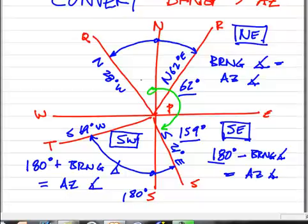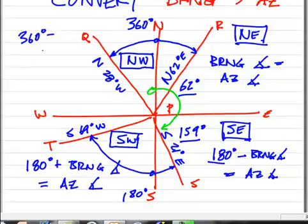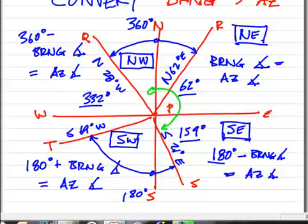And then up to the northwest quadrant, it should be no surprise that since we're dealing with north, but we're going in the counterclockwise direction, we're going to work with 360 degrees here, aren't we? So we're going to take 360 degrees minus our bearing angle, and that will equal our azimuth angle. So in this case, 360 minus 28 is going to give us 332, isn't it? So here we have 332 degrees. Here, down in the southwest quadrant, 180 plus 69 is going to give you 249.